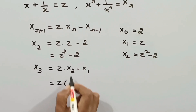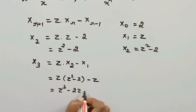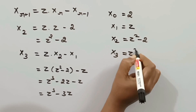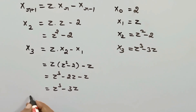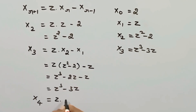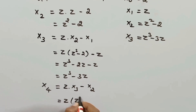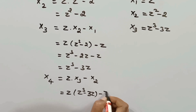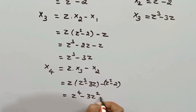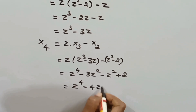Using the recurrence, z · X_2 = z·(z² − 2) = z³ − 2z, and X_3 = z · X_2 − X_1 = z³ − 2z − z = z³ − 3z. For X_4: z · X_3 − X_2 = (z³ − 3z)·z − (z² − 2) = z⁴ − 3z² − z² + 2 = z⁴ − 4z² + 2.